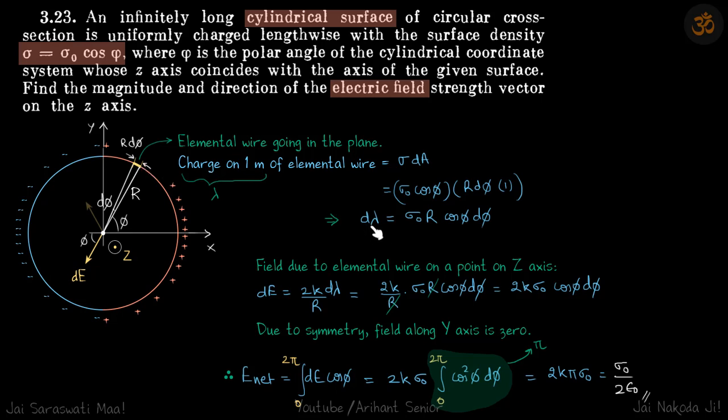Let's call it d lambda because it is a small value. So d lambda on this elemental wire is sigma naught R cos phi d phi. Now we can easily calculate the field because of that wire.